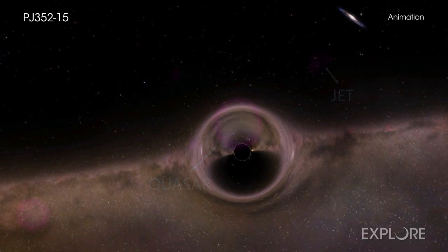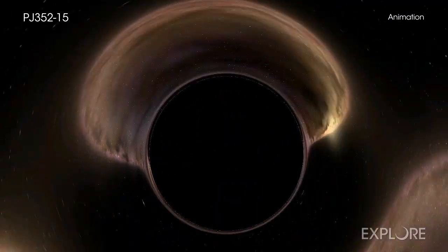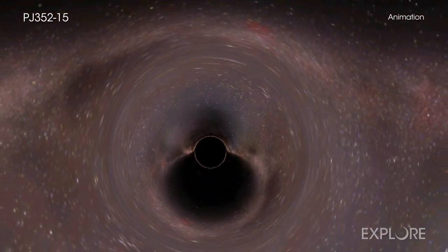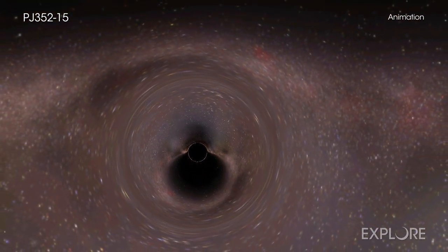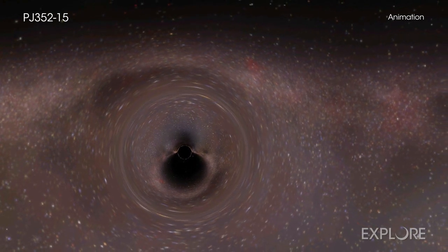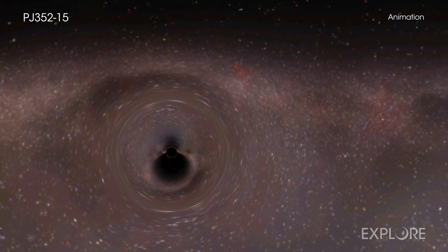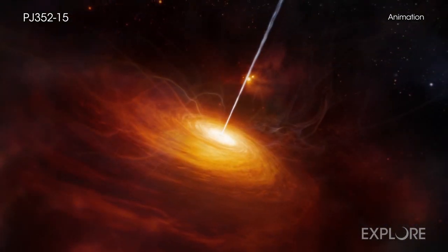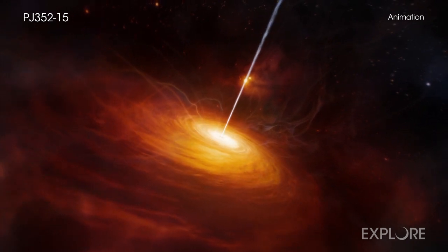This jet is coming from a rapidly growing black hole about 12.7 billion light-years from Earth, or in other words, less than a billion years after the Big Bang. This would make it the most distant black hole with a jet detected in X-rays.